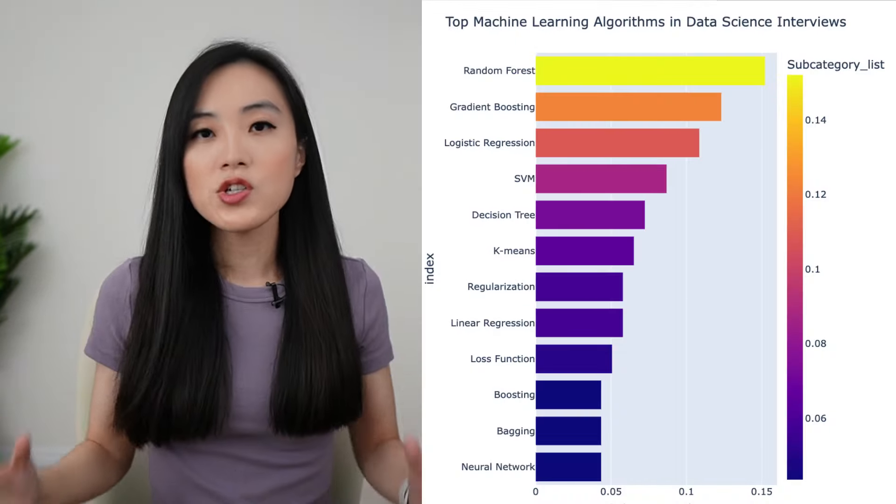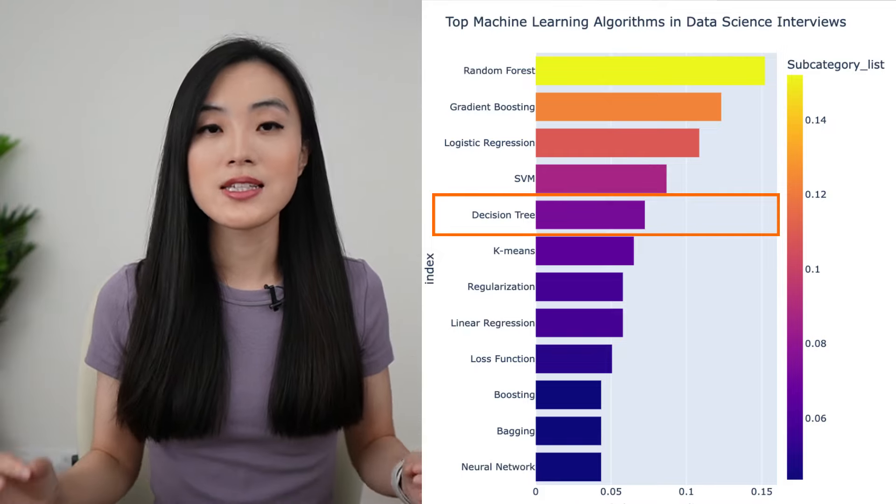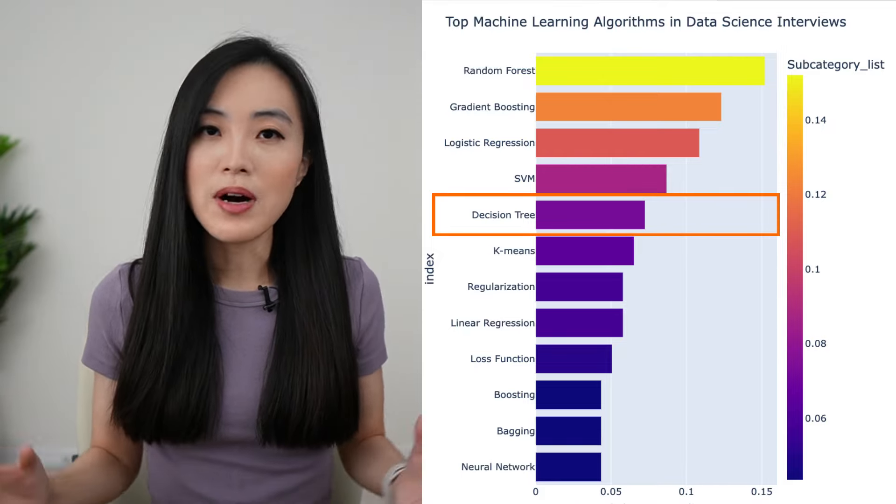Hey guys, it's Emma, welcome back to my channel. In this video we focus on one of the top machine learning algorithms in data science interviews: decision trees. Decision trees is one of the most commonly asked algorithms in interviews, among its random forest, gradient boosted trees, logistic regression, and support vector machines.